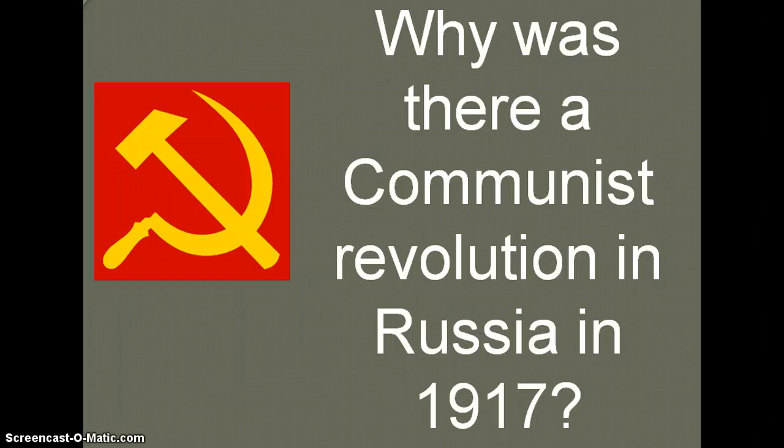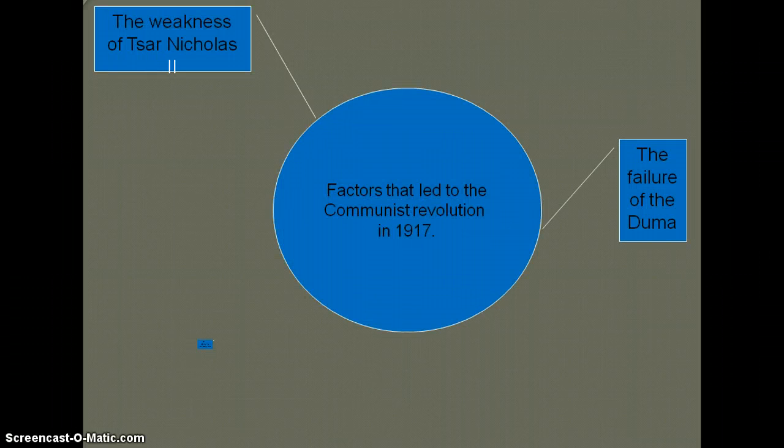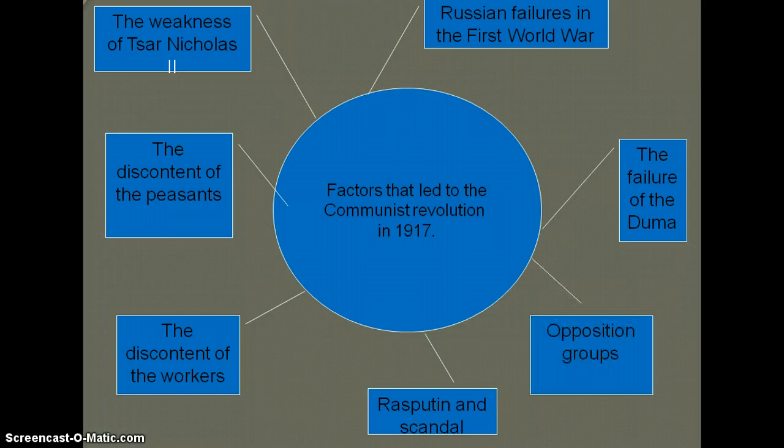Here are the six causes that many historians point to when they look at the Russian Revolution: the weakness of Tsar Nicholas, the discontent of the peasants, the discontent of the workers, Rasputin, Russian failures in the First World War, opposition groups, and the failure of the Duma. We'll review each of these causes.